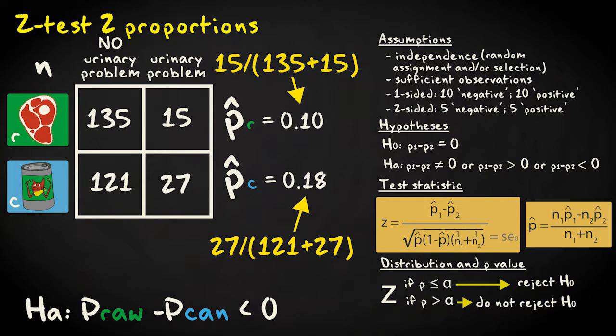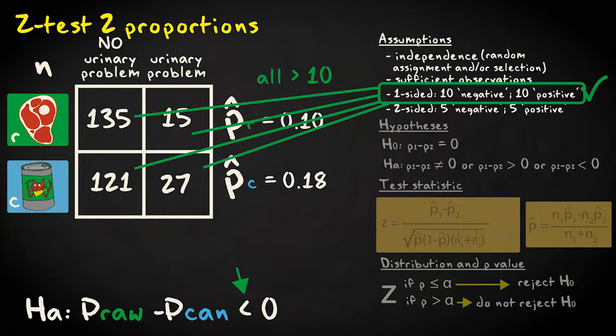The proportion of cats with urinary problems in the two samples are 0.10 and 0.18. The number of observations are sufficient for two-sided and one-sided tests. These are imaginary data. We'll assume they're independent.